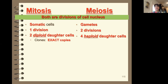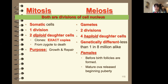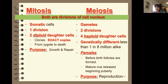Just to review the difference between mitosis and meiosis: in mitosis, the resulting cells are clones of each other; in meiosis, there is variation. The purpose of mitosis is growth and repair, while the purpose of meiosis is reproduction with genetic variation.